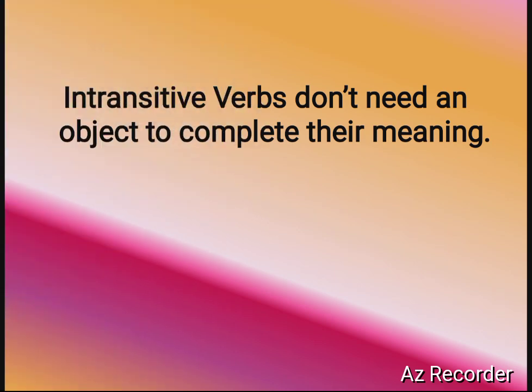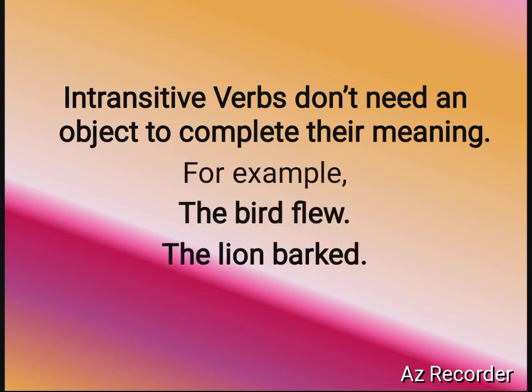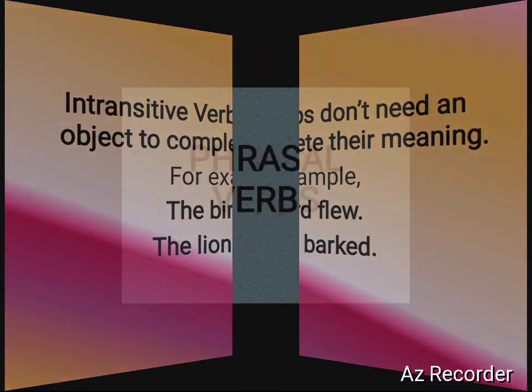Now, intransitive verbs are the opposite — intransitive verbs don't need an object to complete their meaning. The subject and verb together complete the meaning. For example: 'The bird flew.' Here 'the bird' is the subject and 'flew' is the verb. If we ask 'flew what?', we don't get an answer — in fact the question is wrong. So 'flew' is an intransitive verb. Similarly, 'The lion barked' — barked what? We don't get an answer, so 'barked' is an intransitive verb.